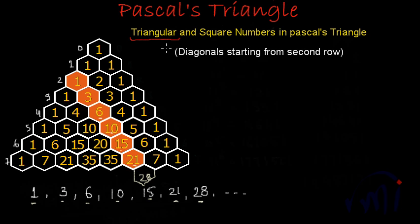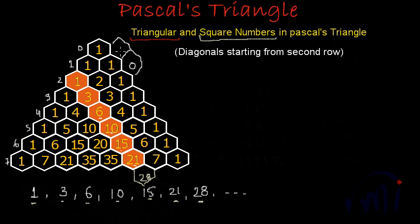Now we want to find the series of square numbers in Pascal's Triangle. As discussed in the introduction, all numbers outside Pascal's Triangle are considered as 0. A number considered outside on this side will be 0, and similarly on the other side all these numbers will be 0. Now we are going to find the square numbers in Pascal's Triangle.